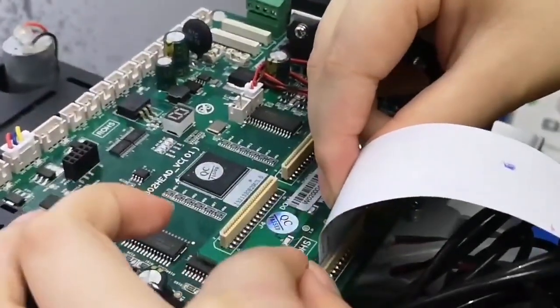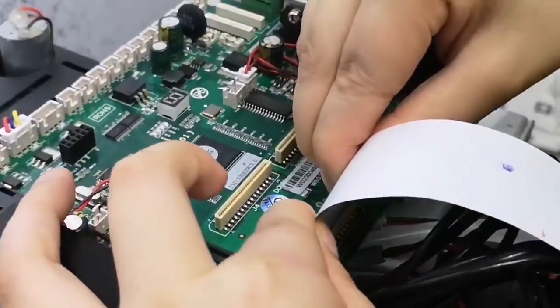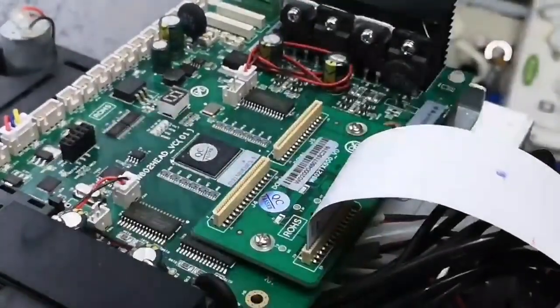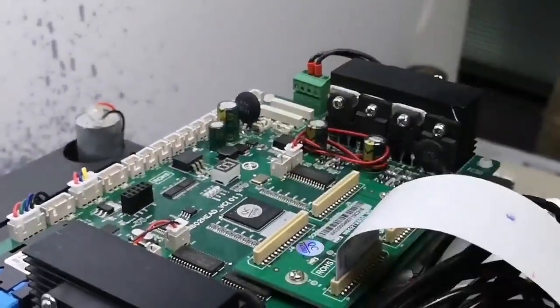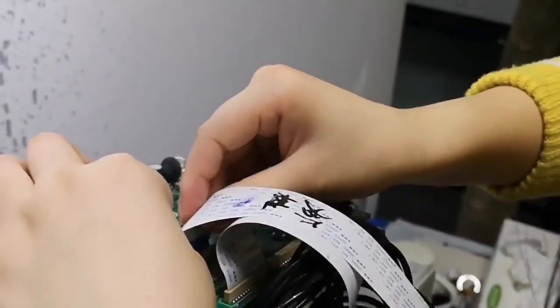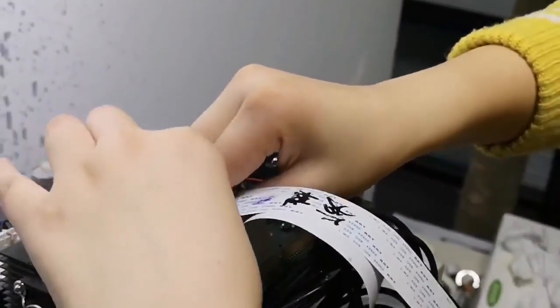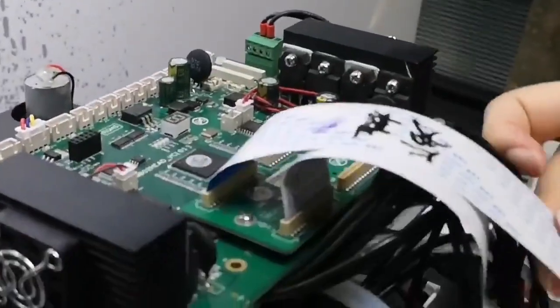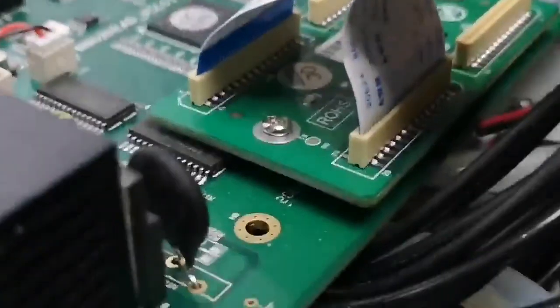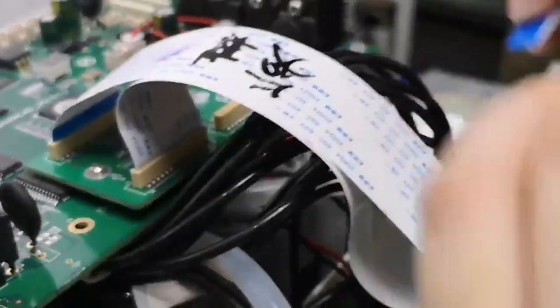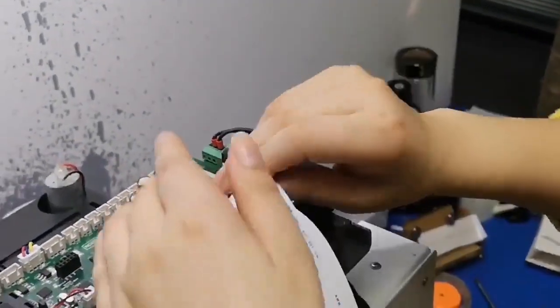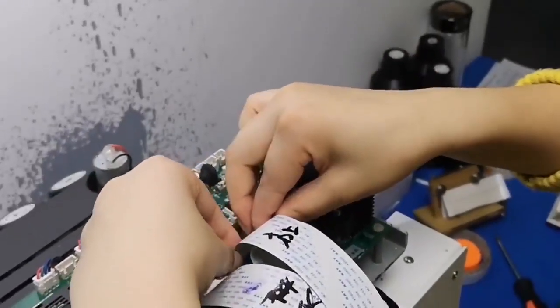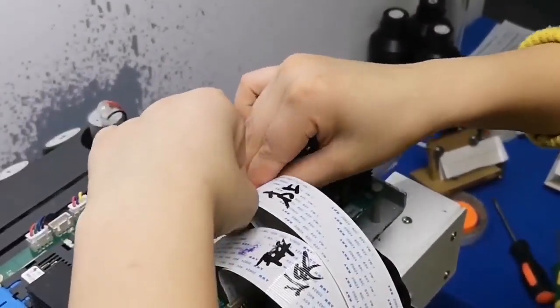And this one. Tighten here. Like that. And the color head, same way. This one. Use two hands. Tighten here. And this one.